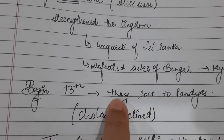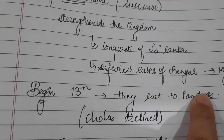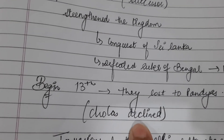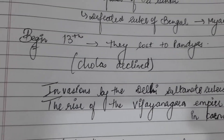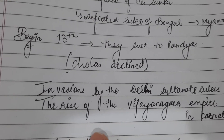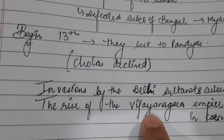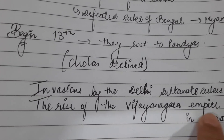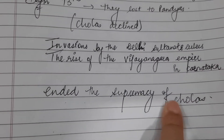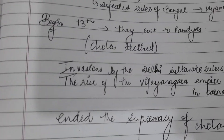In the beginning of the 13th century, the Cholas lost to the Pandyas - somebody had to defeat them eventually. With this defeat, the Cholas went into decline. Ultimately, the invasion by the Delhi Sultanate rulers and the rise of another empire - the Vijayanagara Empire in Karnataka - brought their supremacy to an end.